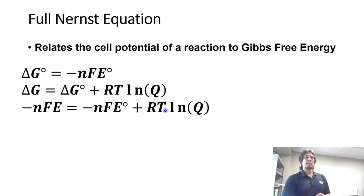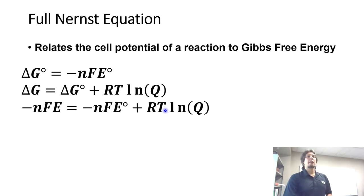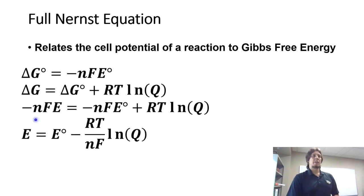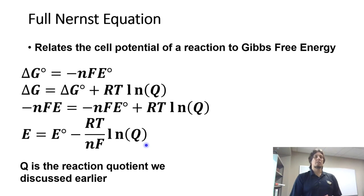Note that the E on the right-hand side has the 'not' symbol indicating standard conditions, whereas the E on the left does not, indicating non-standard conditions. We get: negative nFE equals negative nFE-not plus RT times ln(Q). Dividing all terms by negative nF gives the final Nernst equation: E equals E-not minus RT divided by nF times ln(Q), where Q is the reaction quotient discussed in earlier lectures.